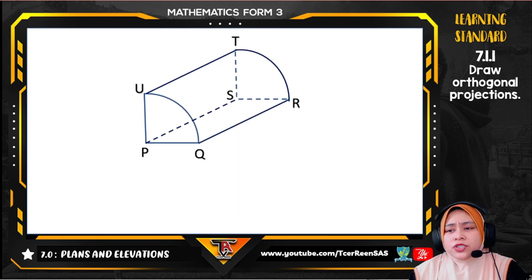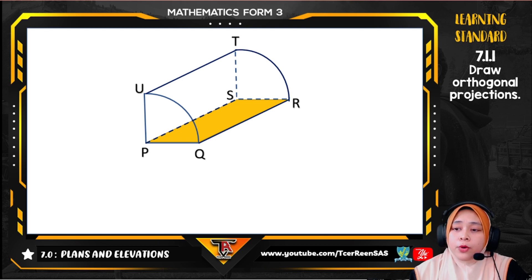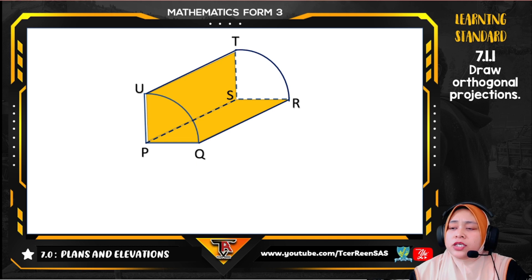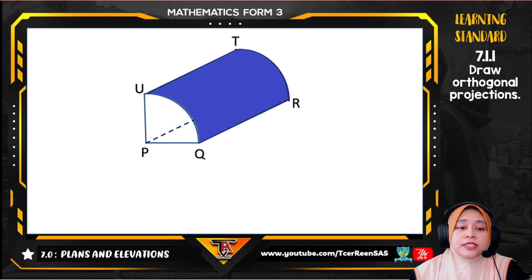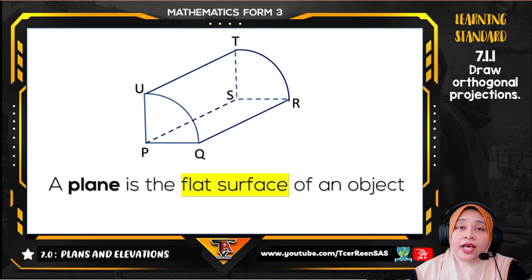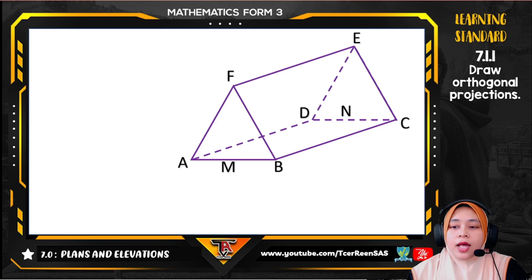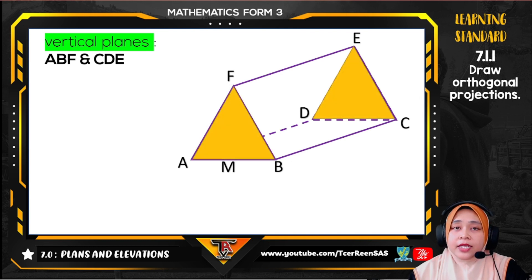I want to share with you this diagram. The diagram shows a quarter of a right cylinder with a horizontal base PQRS, where both PSTU and PQRS are planes and QRTU is a curved surface. A plane is the flat surface on an object. There are three types of planes: vertical plane, horizontal plane, and inclined plane.